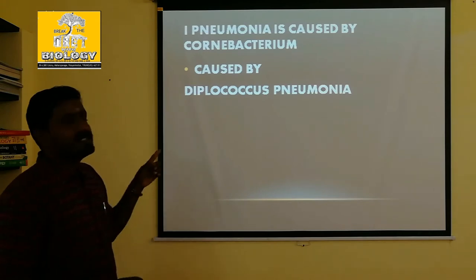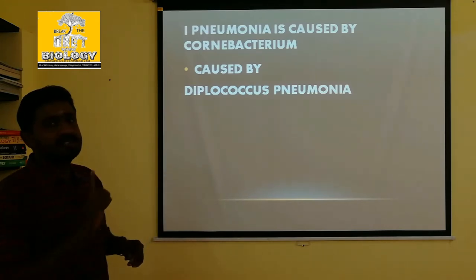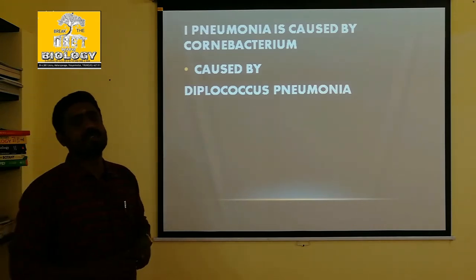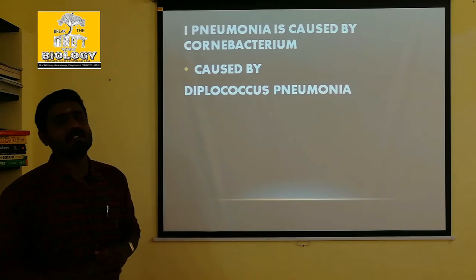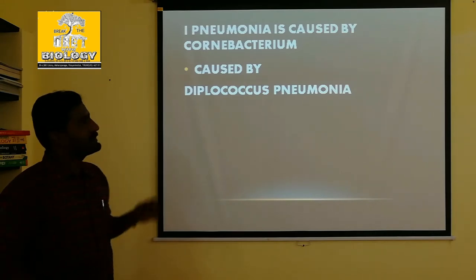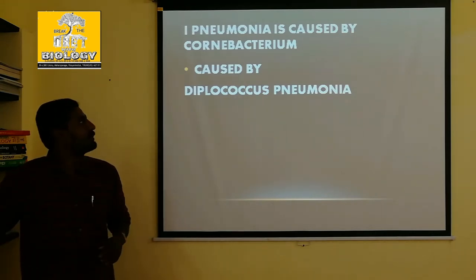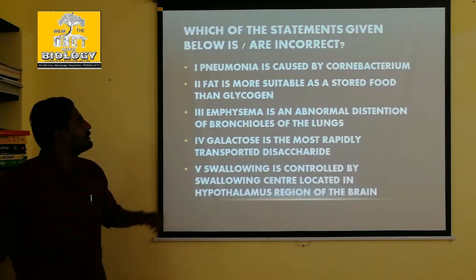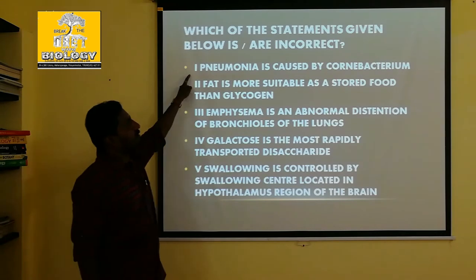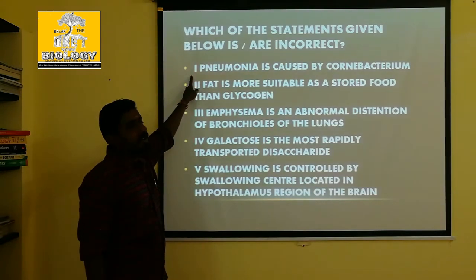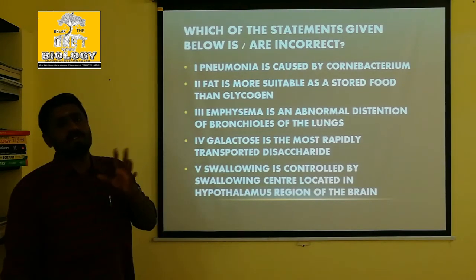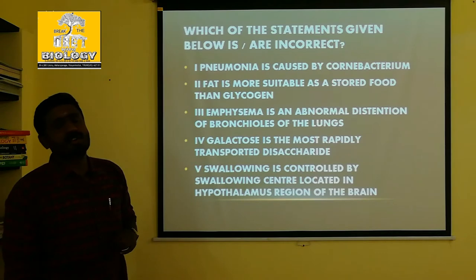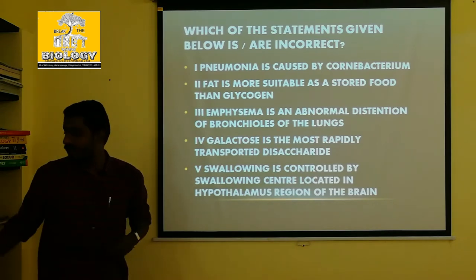This is the wrong one. The first statement is wrong. The question asks which of the following is incorrect. So the first option is wrong — pneumonia is caused not by Corynebacterium, but by Pneumococcus pneumoniae or Diplococcus pneumoniae.